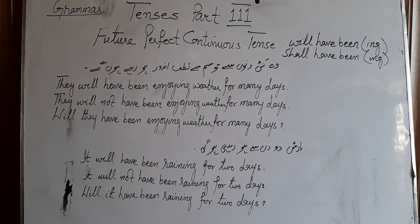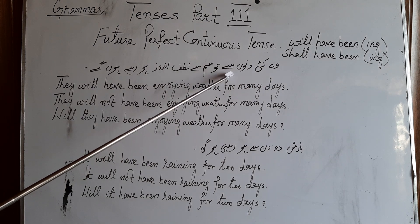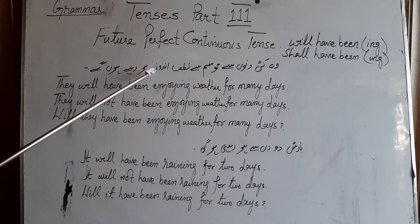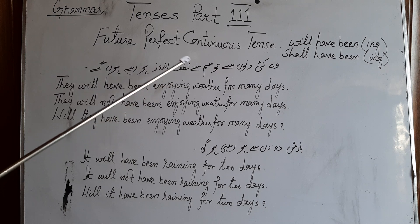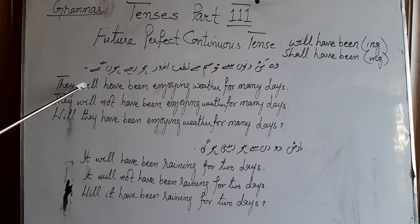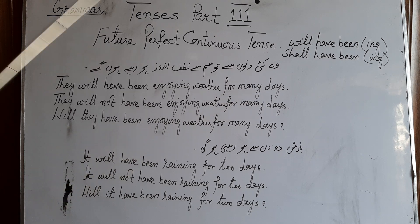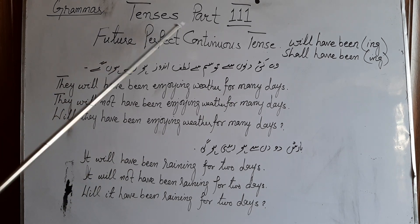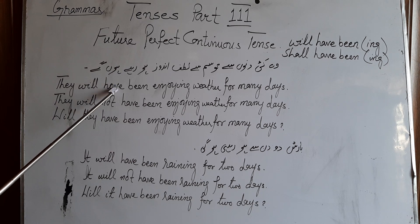In Urdu such type of sentences are given: وہ کئی دنوں سے موسم سے لطف اندوز ہو رہے ہوں گے۔ 'Will' shows گا، گے، گی. They will have been enjoying weather for many days. Now see, in perfect continuous tenses we always use has been, have been, and had been.